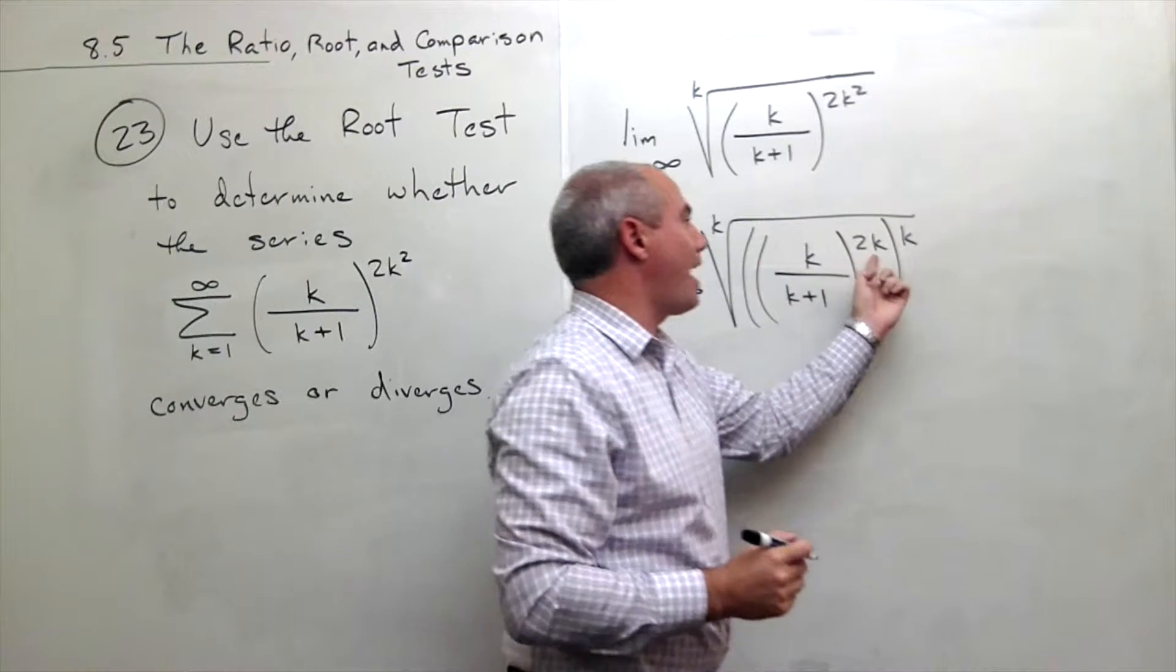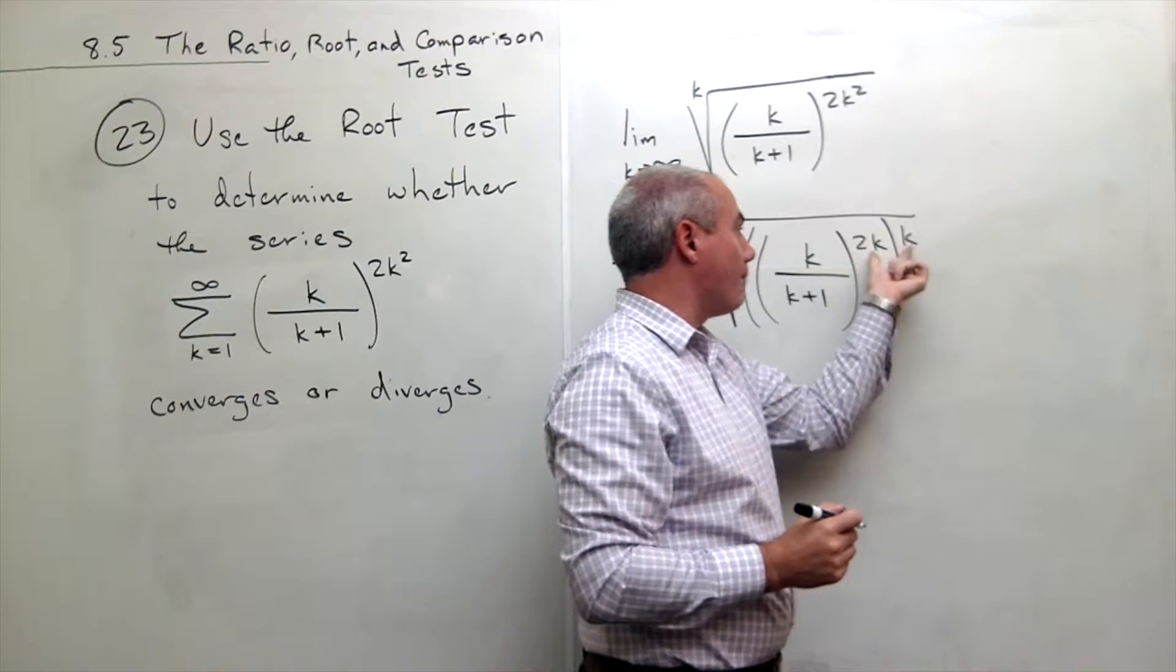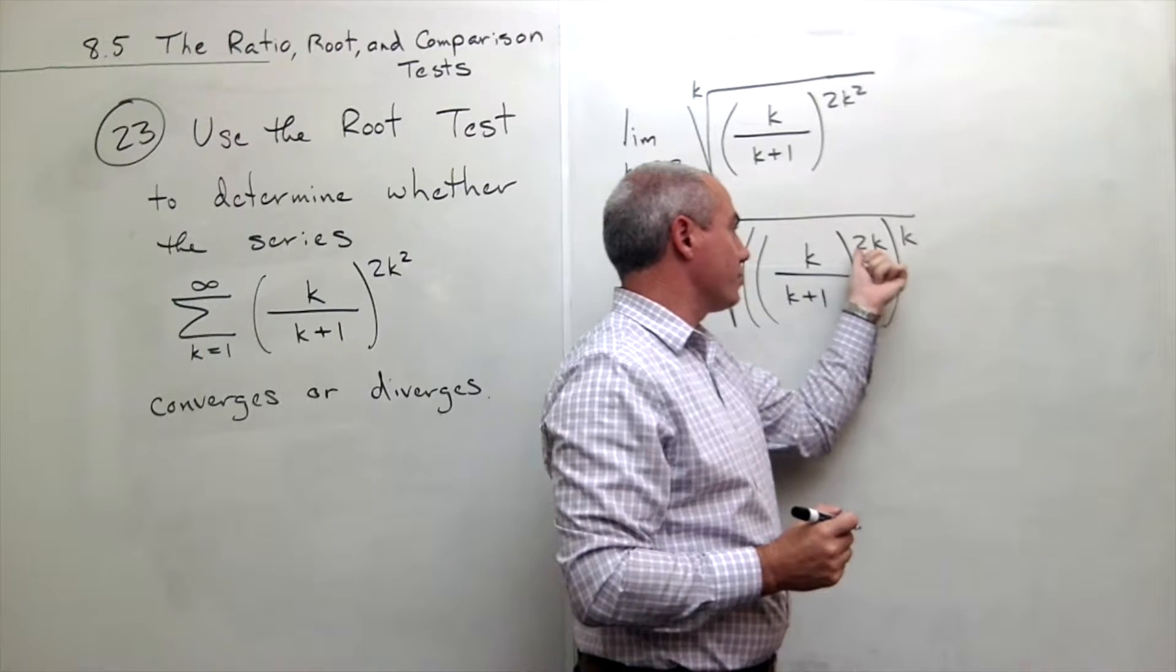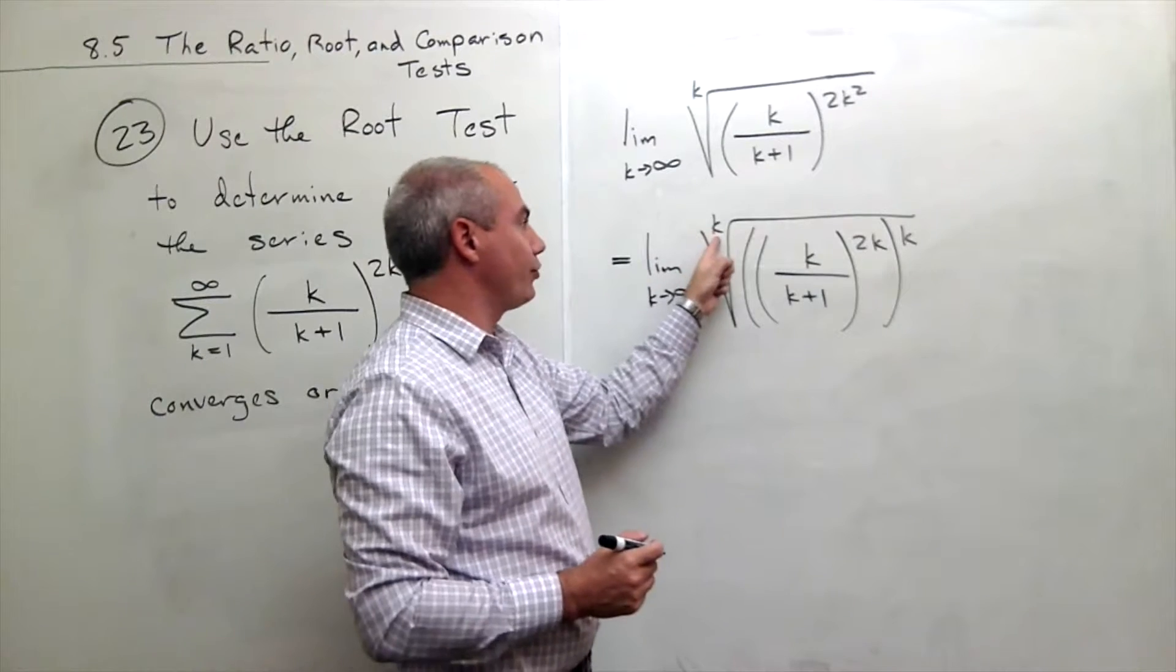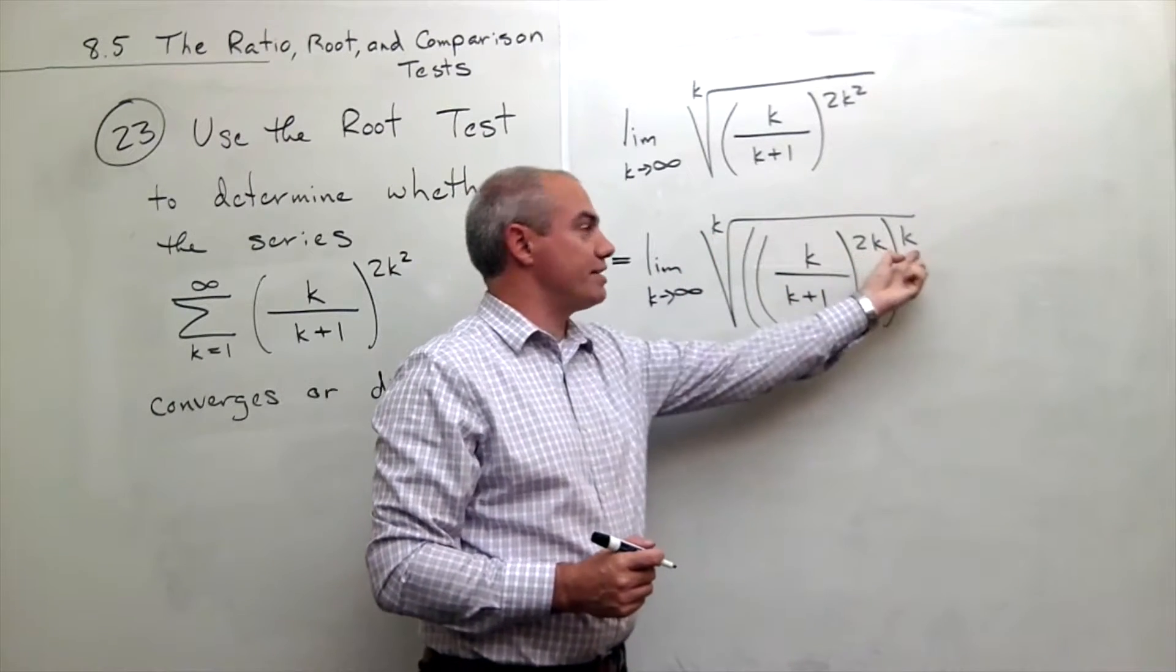2k, all of that raised to the power k. Because if I have something to a power raised to a power, I multiply the two, so this would be 2k squared, which is exactly what I have here. So I have the kth root of